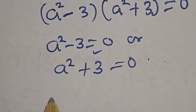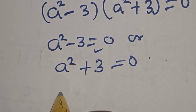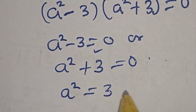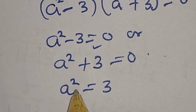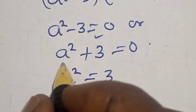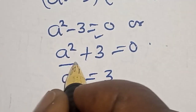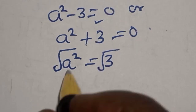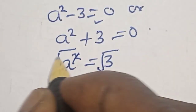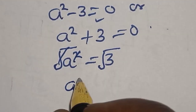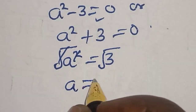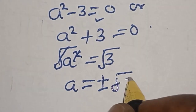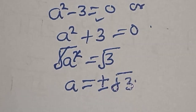From the first case, a squared is equal to 3. Now let's take the square root of both sides. This will cancel this. a is equal to plus or minus square root of 3.